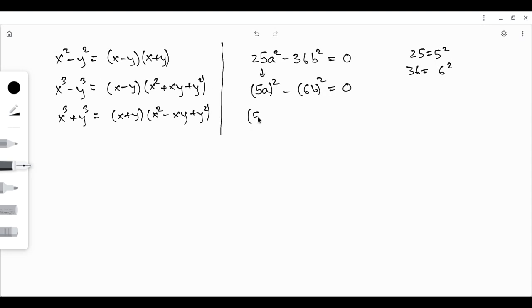(5a - 6b)(5a + 6b) = 0. So you need to be aware of how to use this formula even if you have numbers in front of them.